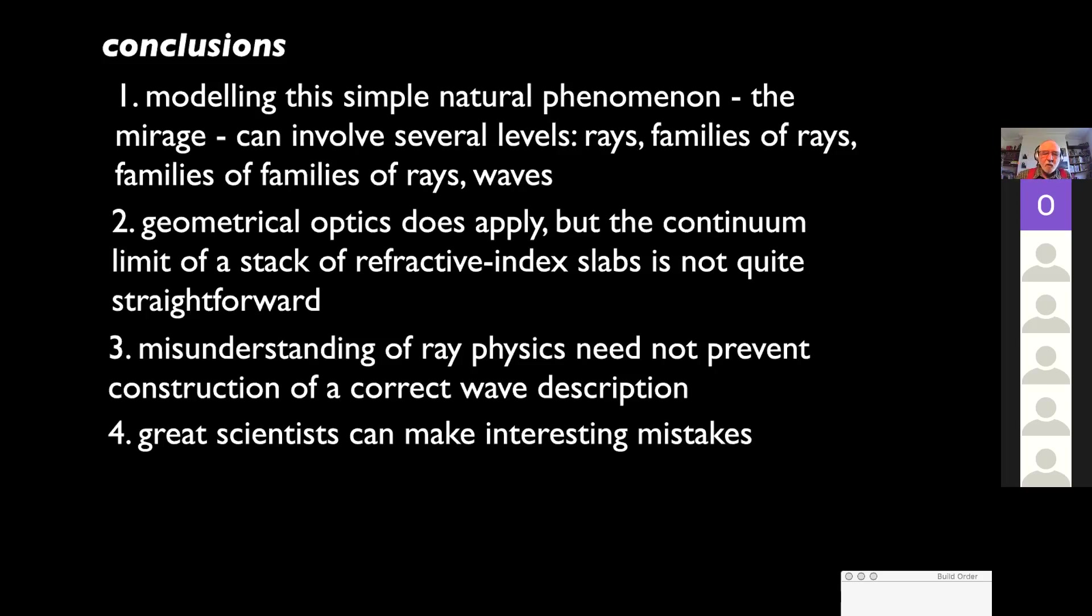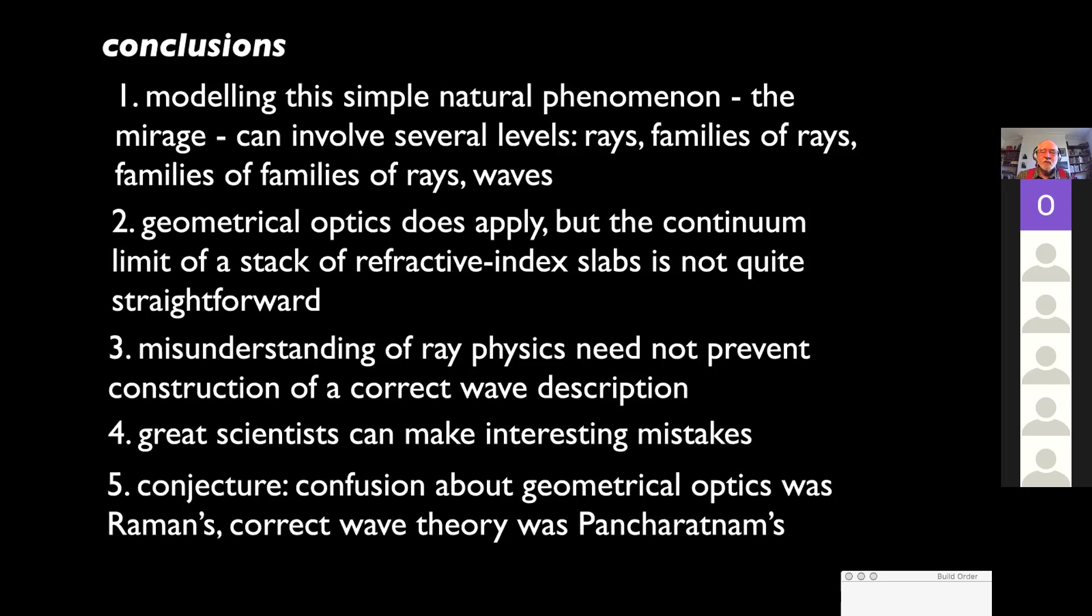And finally, I think that what was wrong, confused in the paper was Raman. What was correct was Pancharatnam. Now, I guess I should say something about the family. I never met Raman, and unfortunately, I never met Pancharatnam. He died too young, but they are two members of a very brilliant family of scientists, Indian scientists. I just mention also, I've met Pancharatnam's widow. He died in Oxford, and she stayed there.